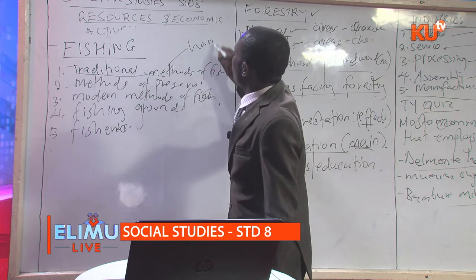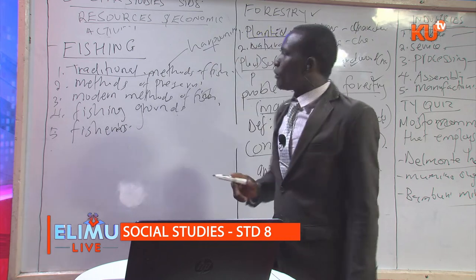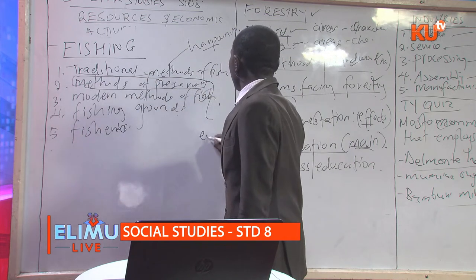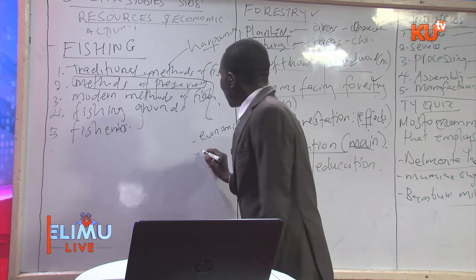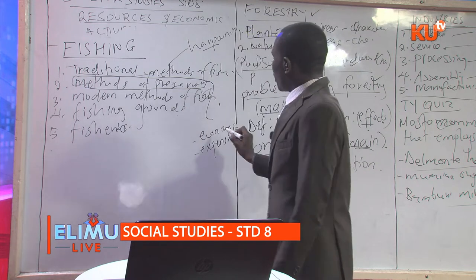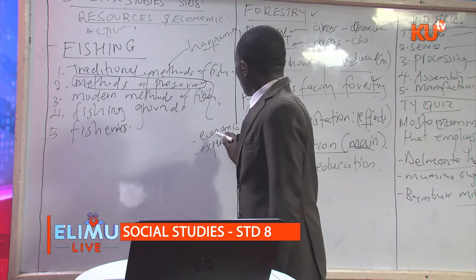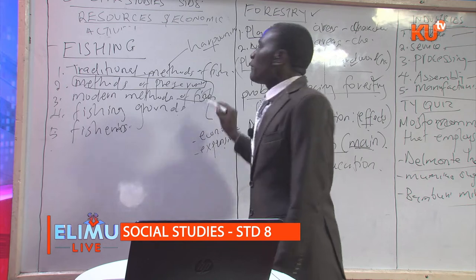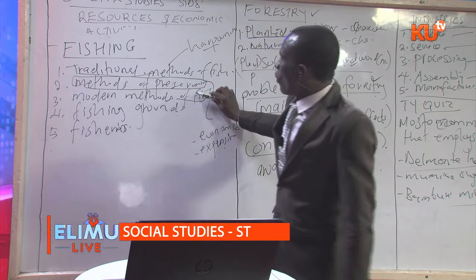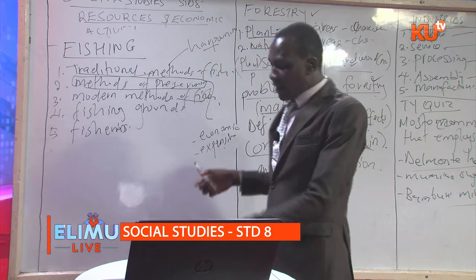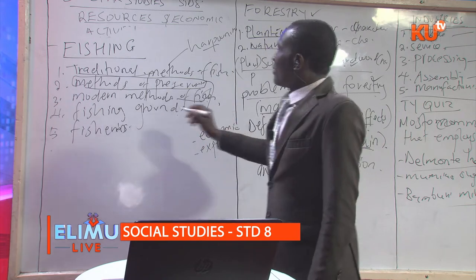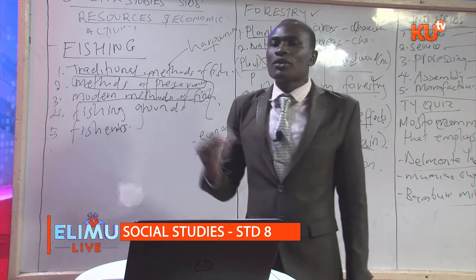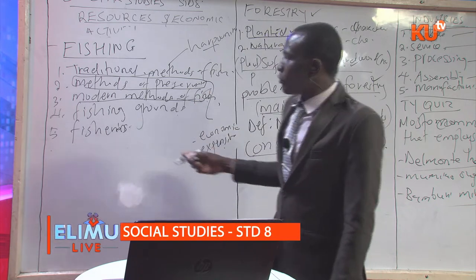On methods of preserving fish, examiners will ask about the most economic method and the most expensive method. On modern methods of fishing, examiners will draw a diagram and ask which method of fishing is shown, or ask which fish is not caught using the method shown on the diagram. Fishing grounds are areas where fishing takes place, and we have inland and marine fishing grounds.